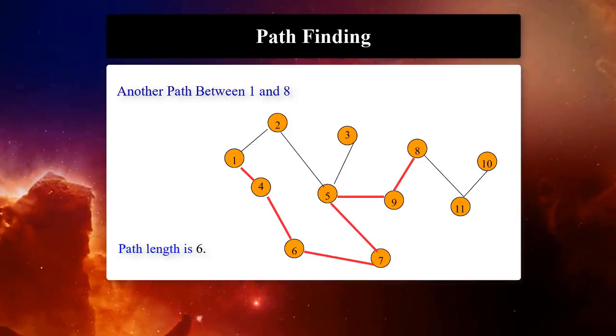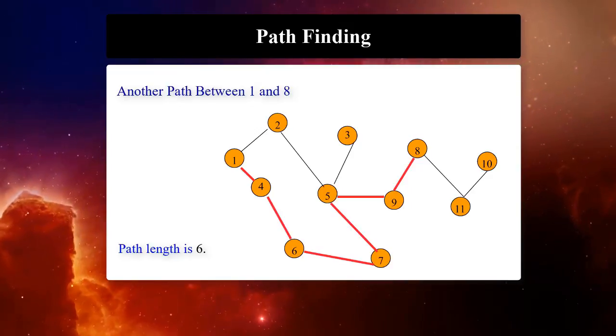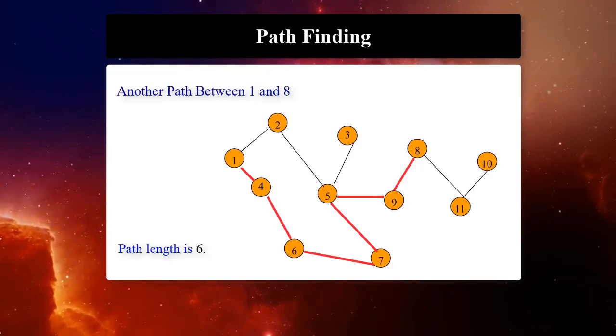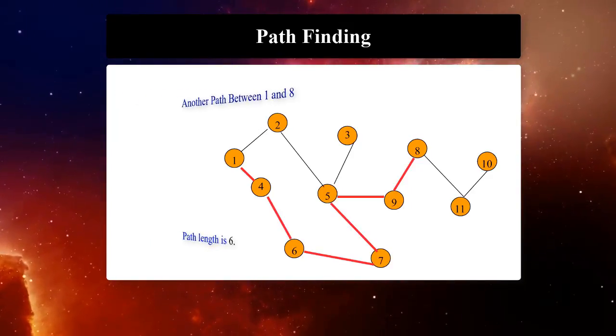The geodesic distance, or simply distance from u to v in graph G, is the length of the shortest path from u to v in G.